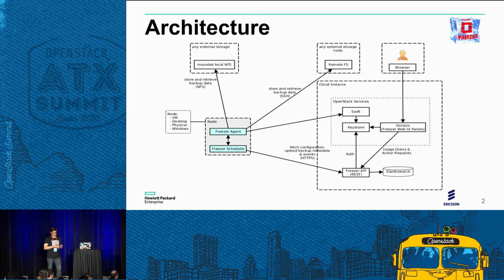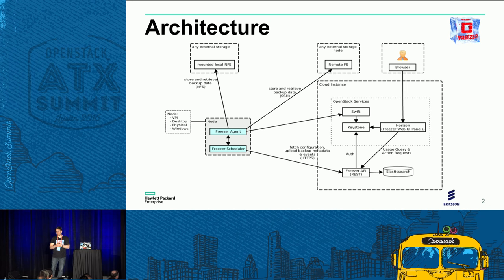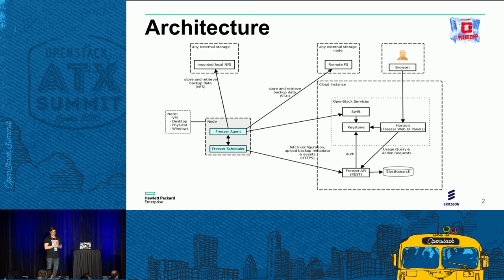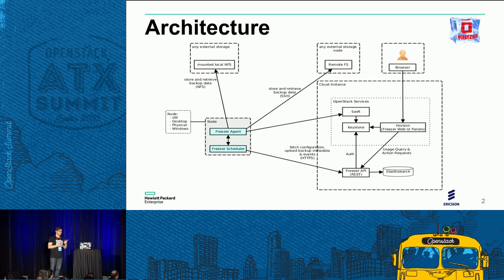Another important part of the equation is storage — where are we going to store and retrieve the data from backups executed daily, hourly, and so on. Currently the storage media supported in the Freezer project are three: Swift, an SSH remote node, and a local file system such as an NFS-attached volume.